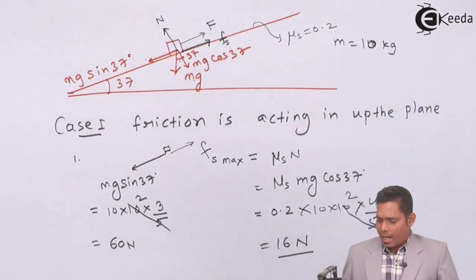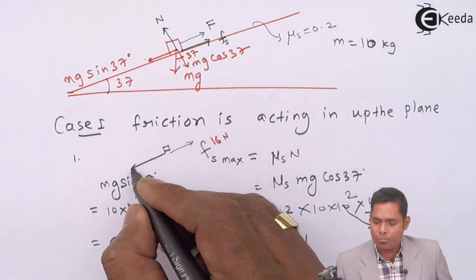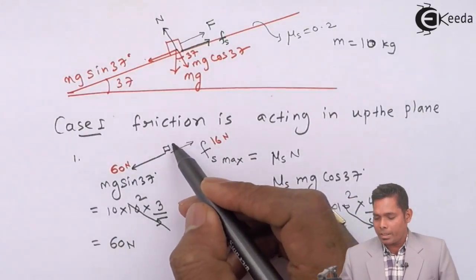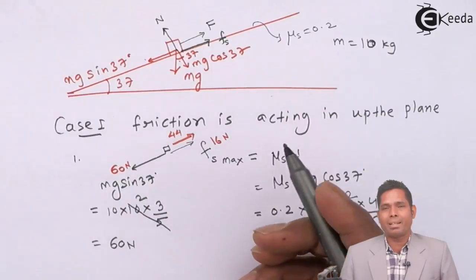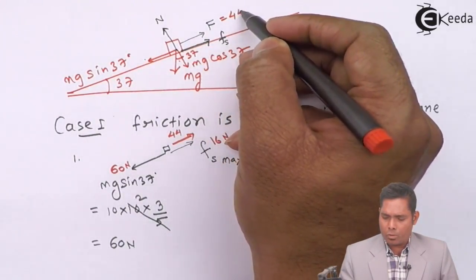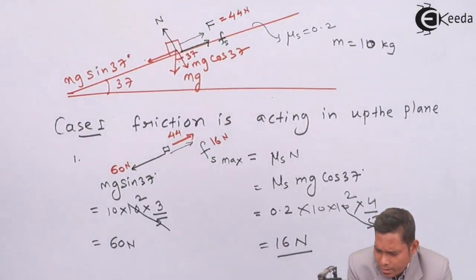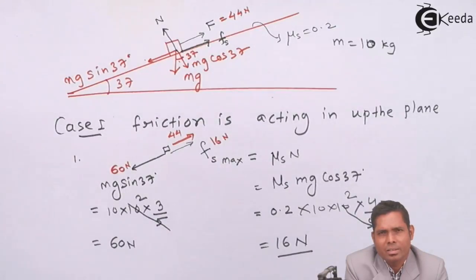The maximum friction can provide is 16 Newton, but the maximum downward force is 60 Newton. That means an extra force has to be applied in the upward direction. The difference is 60 minus 16 = 44 Newton. The downward and upward forces must balance, so this force F is 44 Newton. This is the minimum force to prevent the block from sliding down. Now, is 44 Newton the only answer? Certainly not.